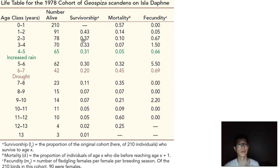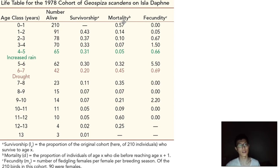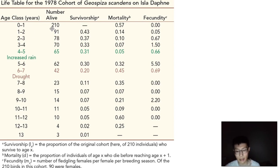For mortality, you're looking at how many individuals don't make it from one time step to the next — the proportion of individuals of a given age x who die before moving on to age x+1. Originally there are 210 individuals, and after that first age class to the second, we only have 91, meaning about 119 individuals died. So you take 119 divided by the individuals alive in the previous age class: 119 divided by 210 gives you 0.57, which is your mortality rate.